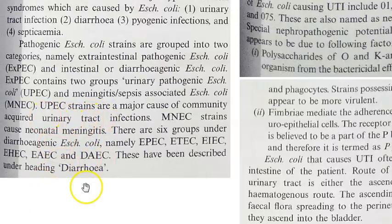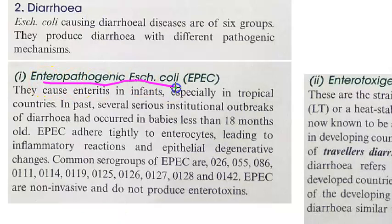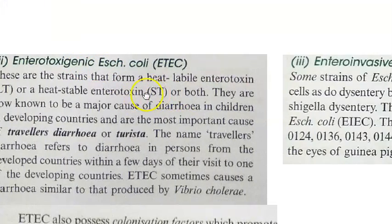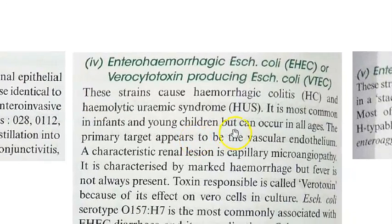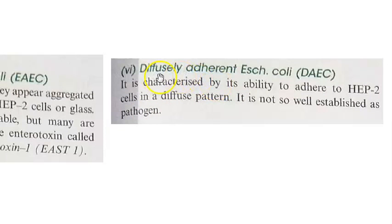Urinary pathogenic E. coli are a major cause of community-acquired urinary tract infections. Under diarrhoeagenic (intestinal) E. coli there are six groups: EPEC (enteropathogenic), ETEC (enterotoxigenic), EIEC (enteroinvasive), EHEC (enterohemorrhagic, also called verocytotoxin-producing E. coli), enteroaggregative E. coli, and DAEC (diffusely adherent E. coli).